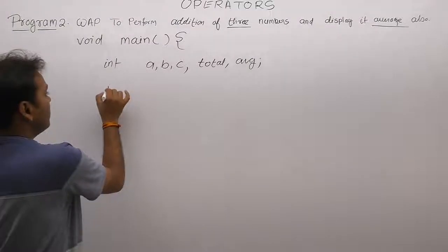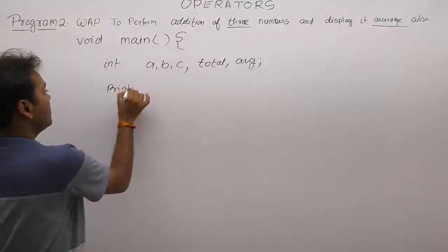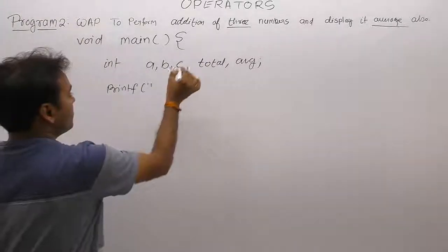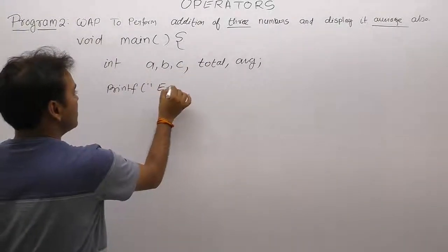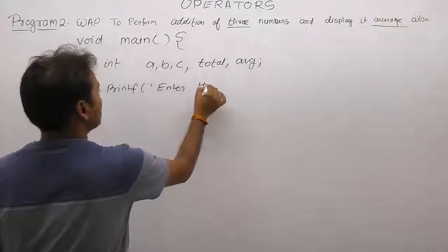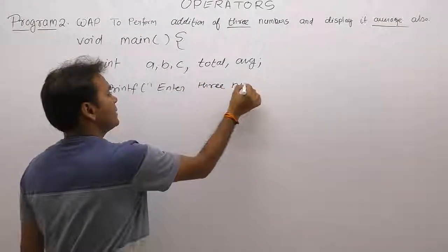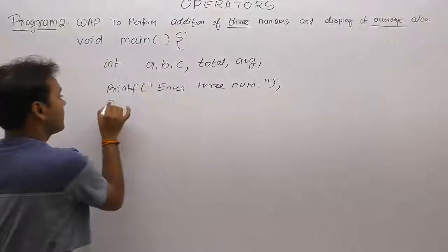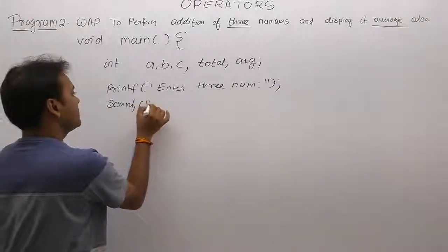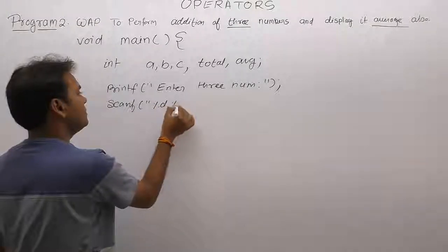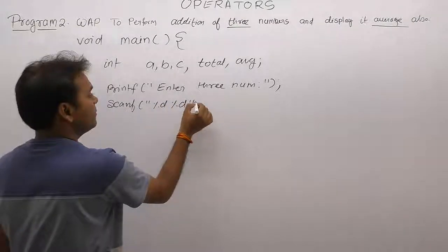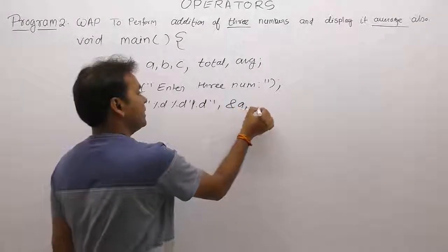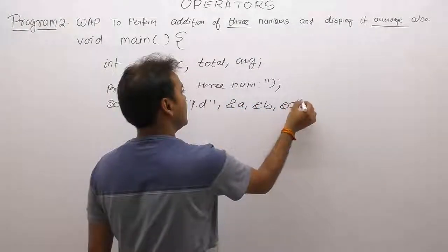Then, reading inputs from the keyboard — how many inputs are required? There are three inputs for three numbers. Enter three numbers. Next, reading inputs from the keyboard using scanf. The total number of inputs supplied are three: address of a, address of b, address of c.